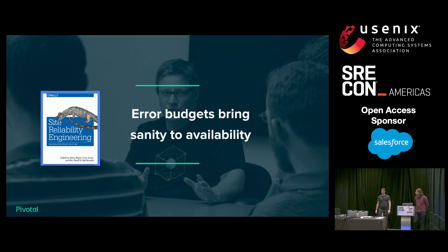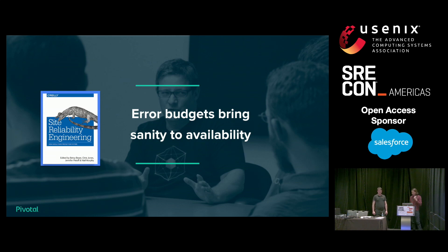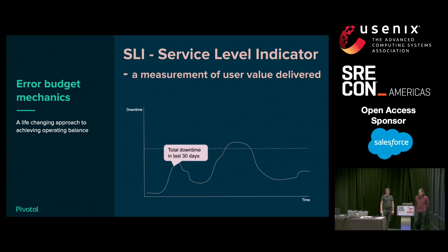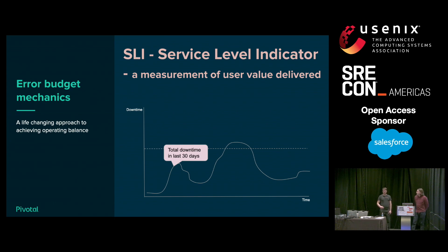To level set, our expectation is that you've read the Site Reliability Engineering book. And that you've had a similar experience to the one we've had within Pivotal — that using error budgets brings sanity to the process of managing availability. So, just to level set some common terms: when we are thinking about availability, we typically plot something against time. That thing is what we call our service level indicator — some measurement of the value that our system is delivering. In this particular case, we're measuring how much downtime we've had and computing the rolling downtime over a period of time, say 30 days. That's our service level indicator.